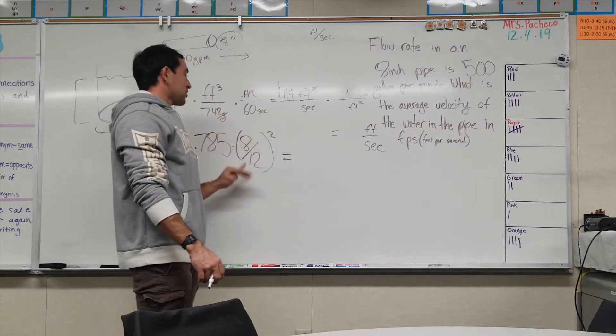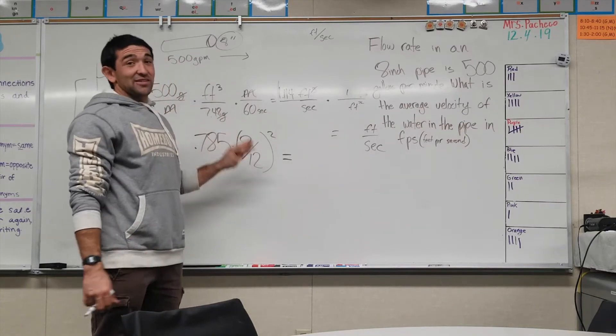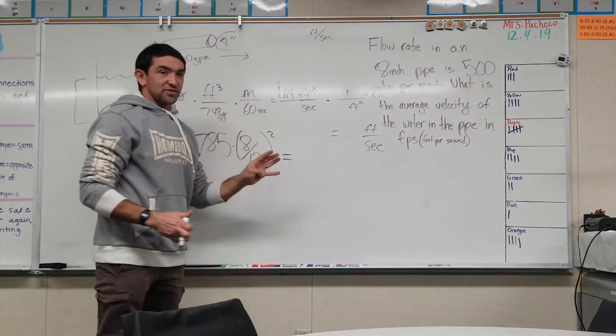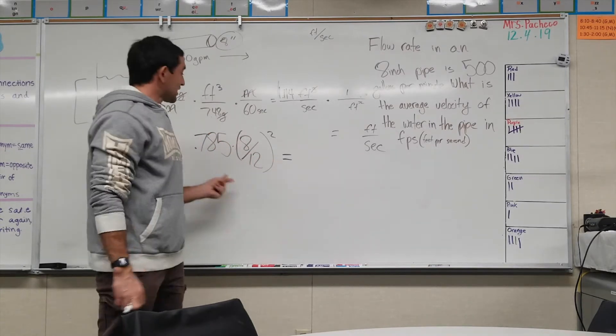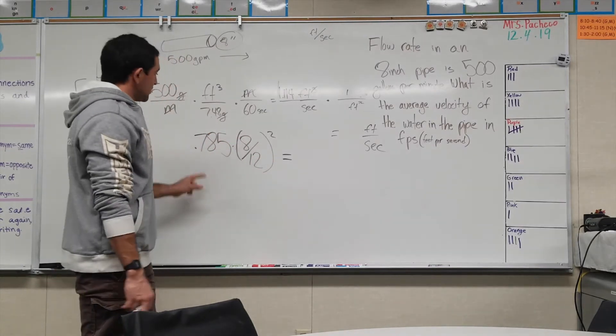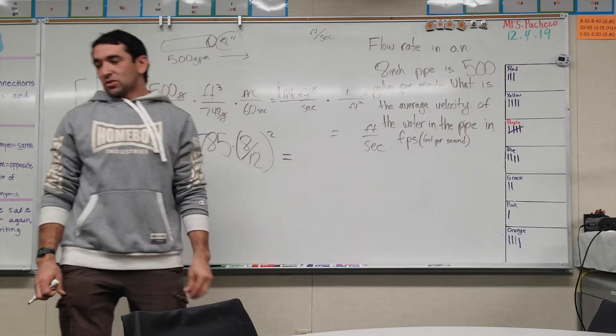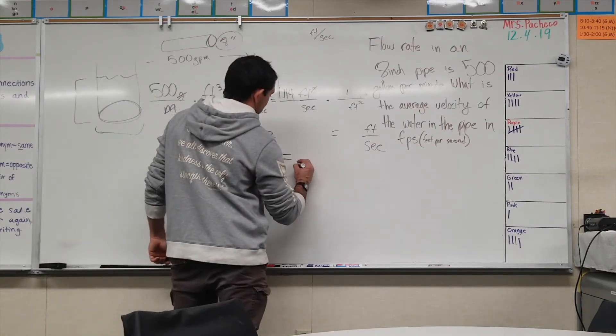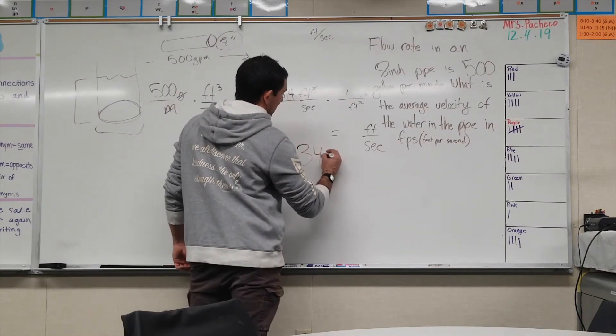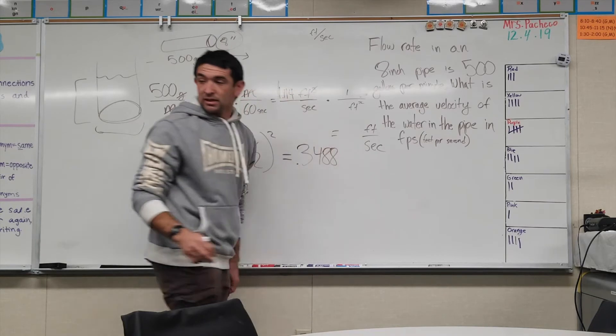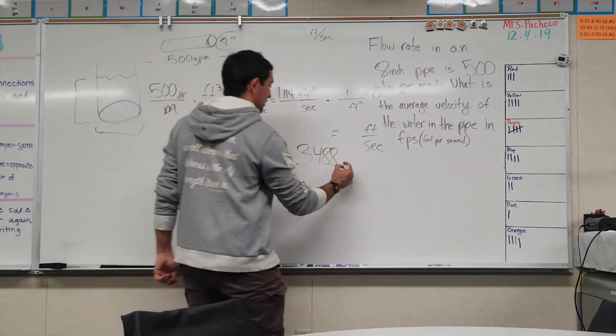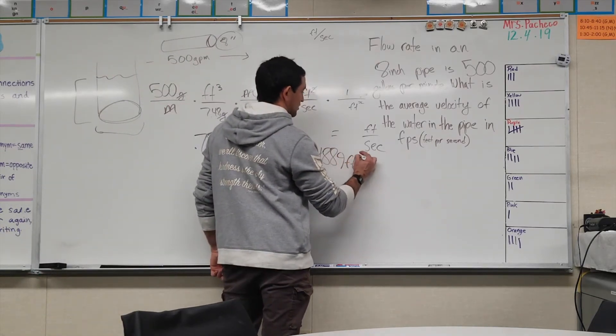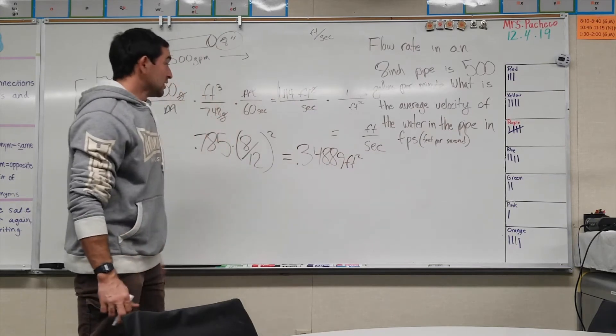So 0.785 times 8 - not 8 over 12 because you have to do these in foot, you can't do that equation in inches. So 0.785 multiplied by 8 over 12 squared equals 0.349 square foot.